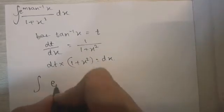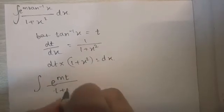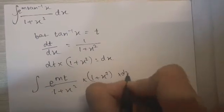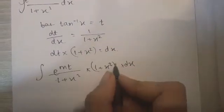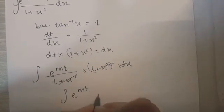So now I'm going to substitute e raised to m into t upon 1 plus x square into 1 plus x square into dx. So the 1 plus x square gets cancelled and I'm left with e raised to m into t dt.